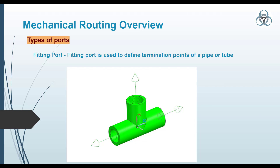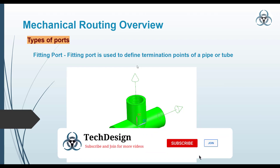There are two types of ports: fitting port and fixture port. A fitting port is used to define a termination point for a tube or pipe. As you can see here, this is a qualified component and this is the fitting port symbol — it defines the termination for the pipe. One pipe comes from one end and ends at this point; from this point there will be a connector, and again another routing starts. So it is not a continuation — it is the end point of a particular tube. That is called a fitting port.